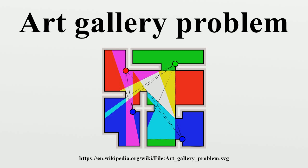To find a three-coloring, it is helpful to observe that the dual graph of the triangulation is a tree, for any cycle in the dual graph would form the boundary of a hole in the polygon, contrary to the assumption that it has no holes. Whenever there is more than one triangle, the dual graph must have a vertex with only one neighbor, corresponding to a triangle that is adjacent to other triangles along only one of its sides. The simpler polygon formed by removing this triangle has a three-coloring by mathematical induction, and this coloring is easily extended to the one additional vertex of the removed triangle.